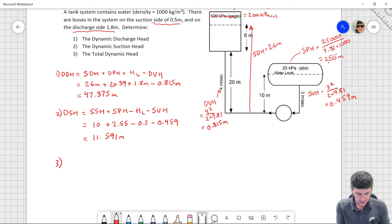The total dynamic head is going to be equal to my dynamic discharge head minus my dynamic suction head. And it's going to be equal to 47.375 minus 11.591, 35.78 meters.